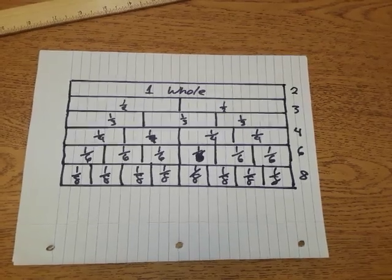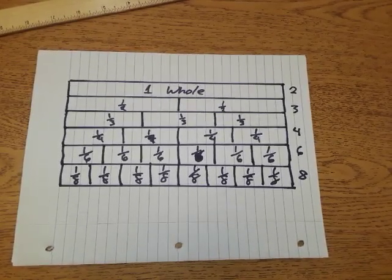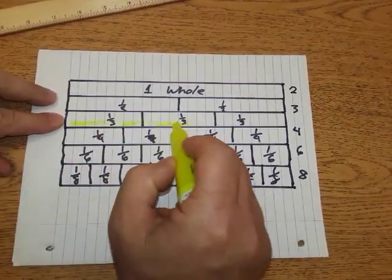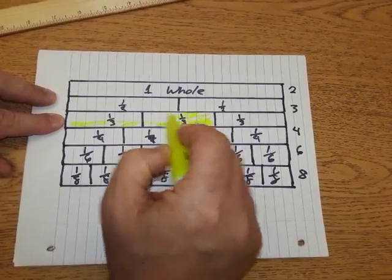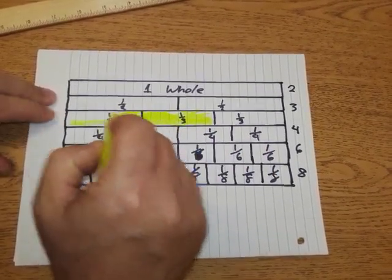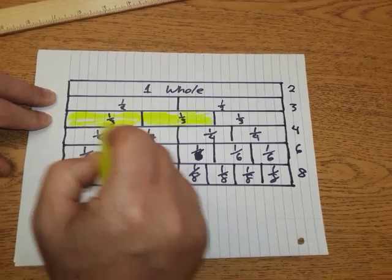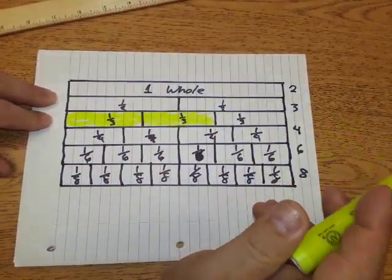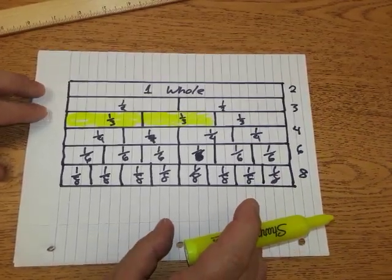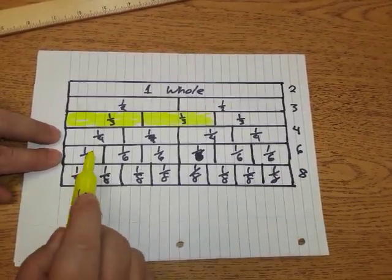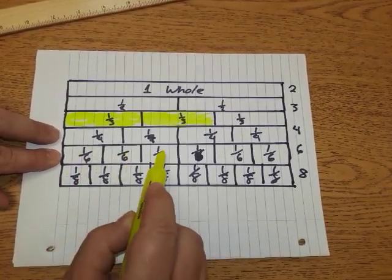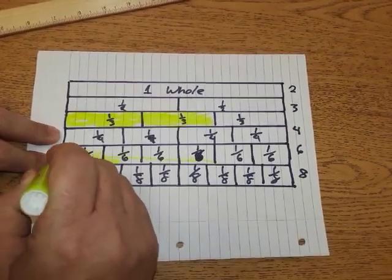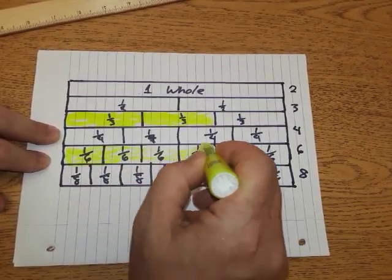Typically with strip diagrams, we shade in what part we're representing. So if I want to represent two thirds, I would go to my denominator three and I would shade in all that right there. Or say if I want to represent four sixths, I've got my sixths line, I count over four of them—one, two, three, four—and I shade in four of the sixths. That would represent four sixths.